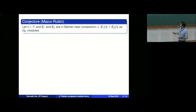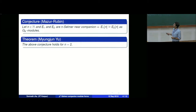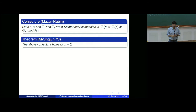A student of Rubin recently proved this conjecture for n equal to 2 this year: if E_1 and E_2 are 2-near-Selmer companions, then the elliptic curves are congruent mod 2. However, because we are dealing with quadratic characters, the 2-Selmer case is rather special, and that proof will likely not extend to the general case with odd prime p.